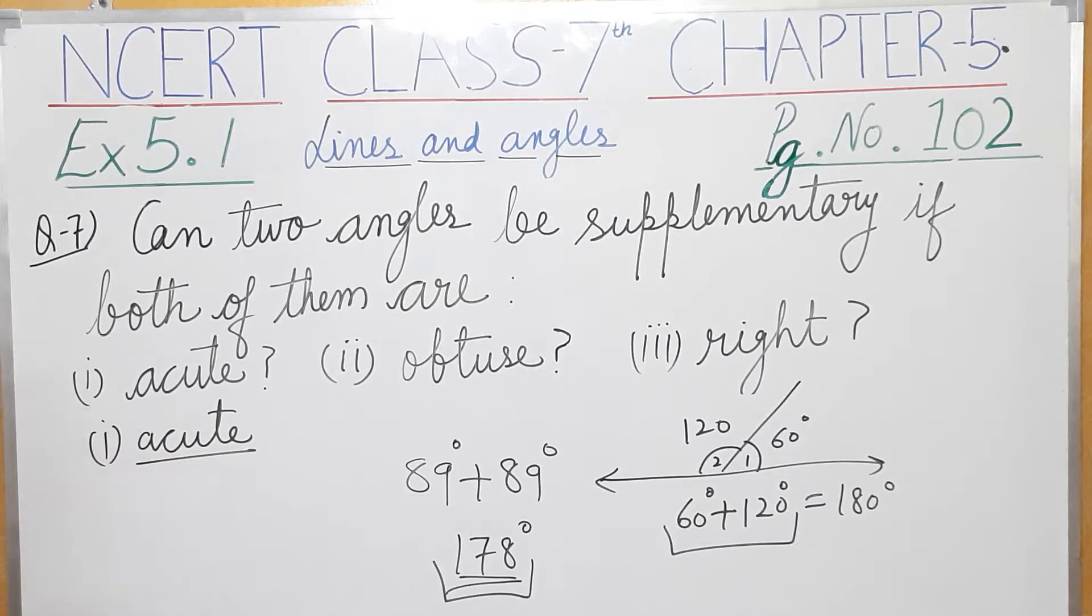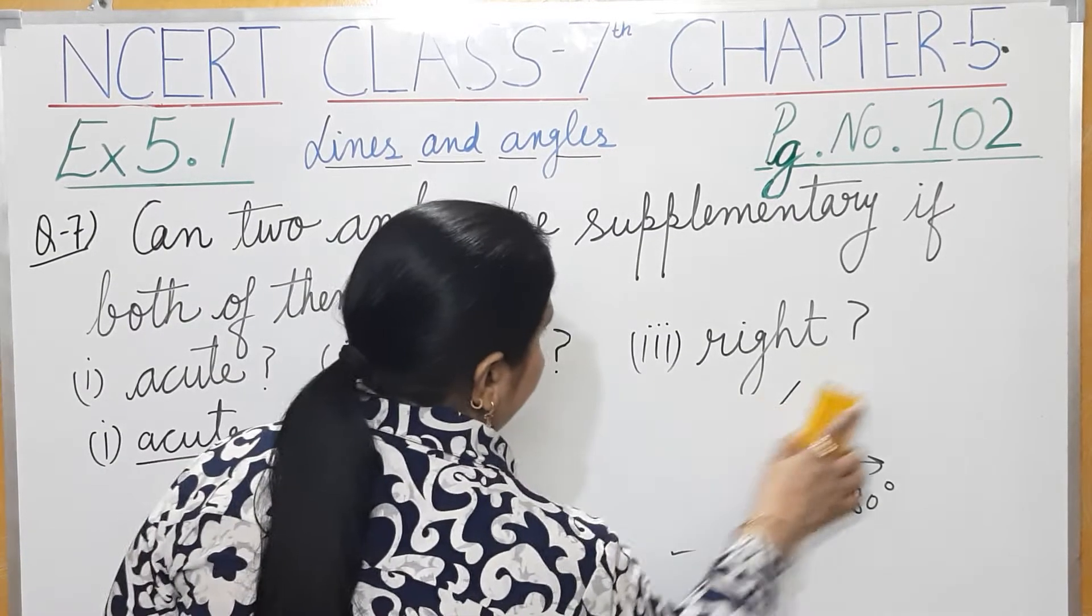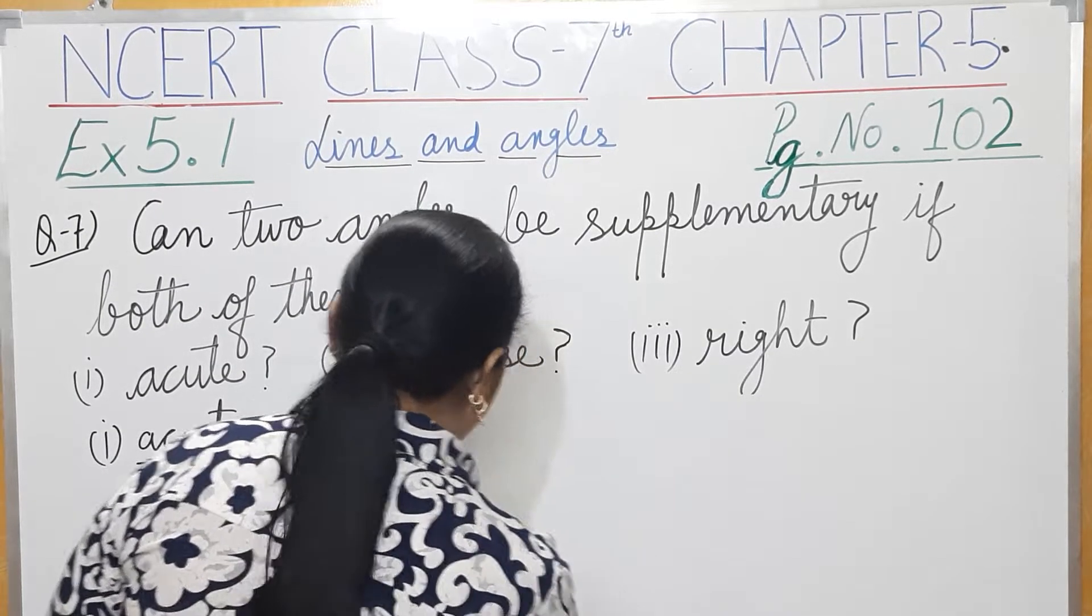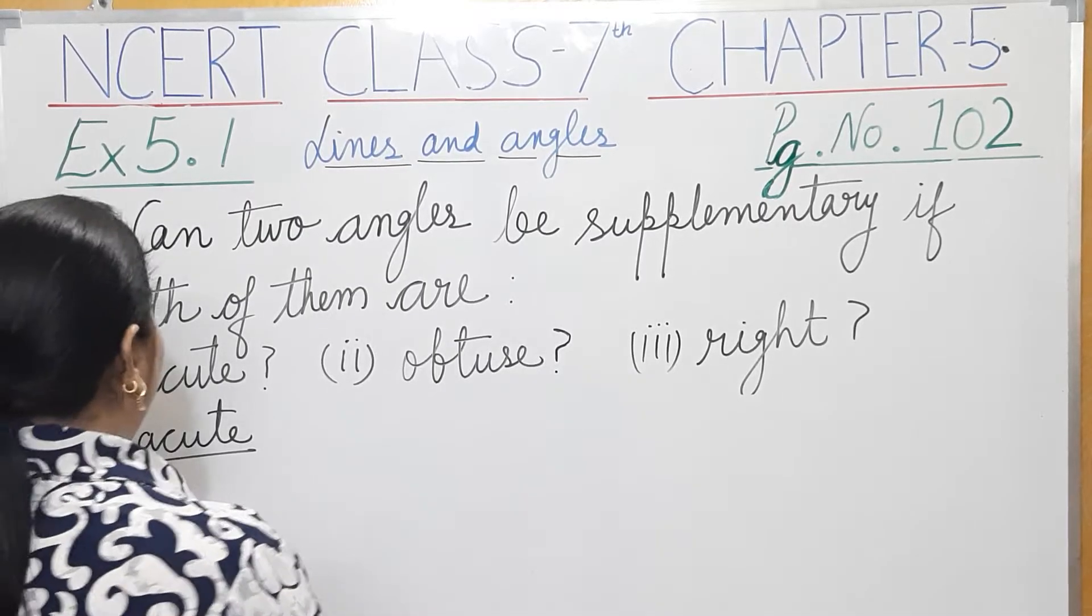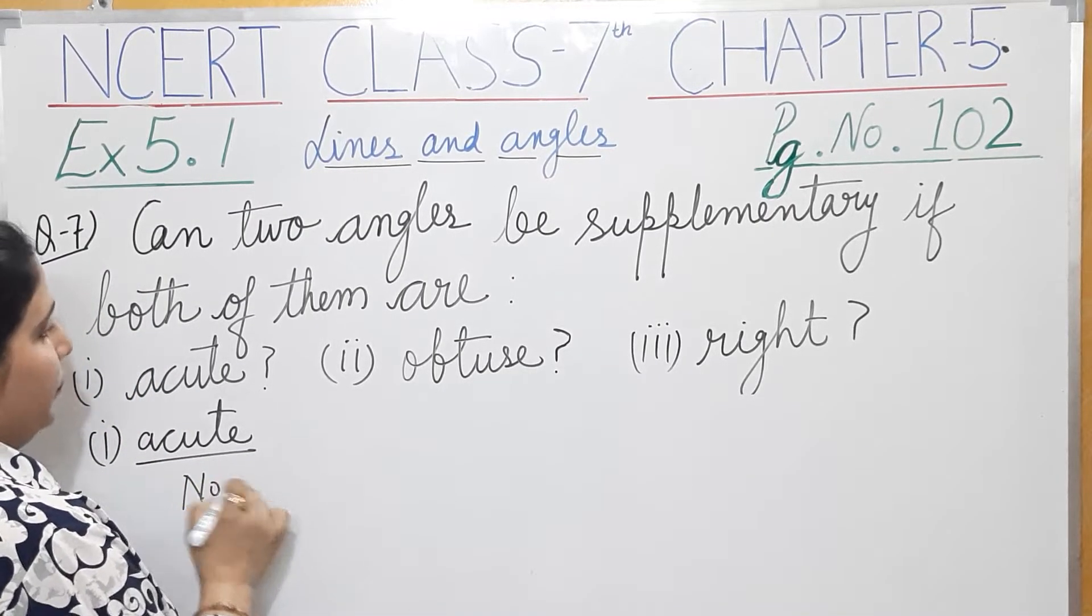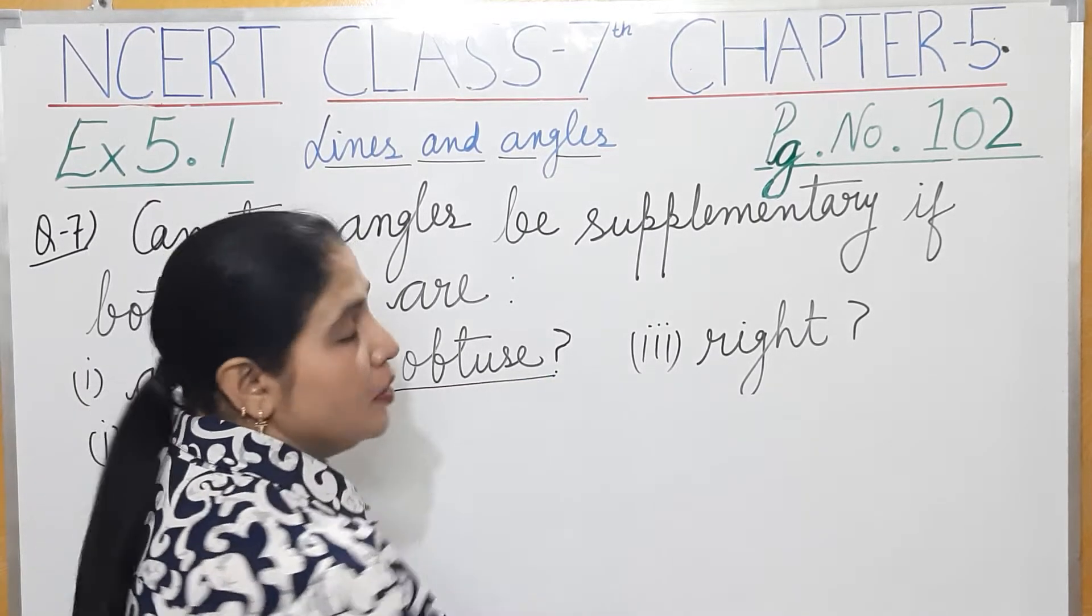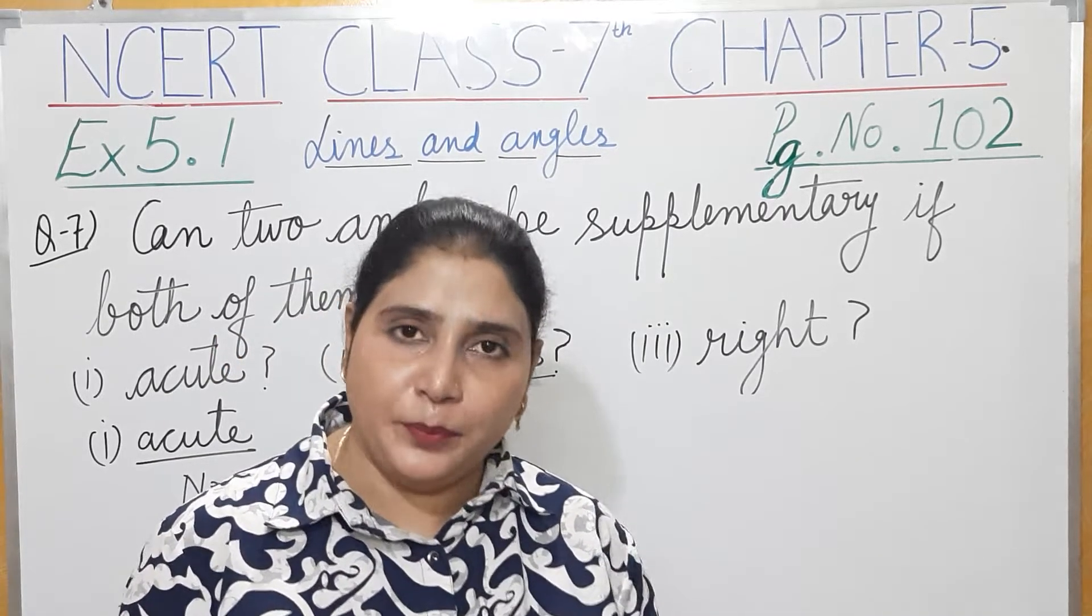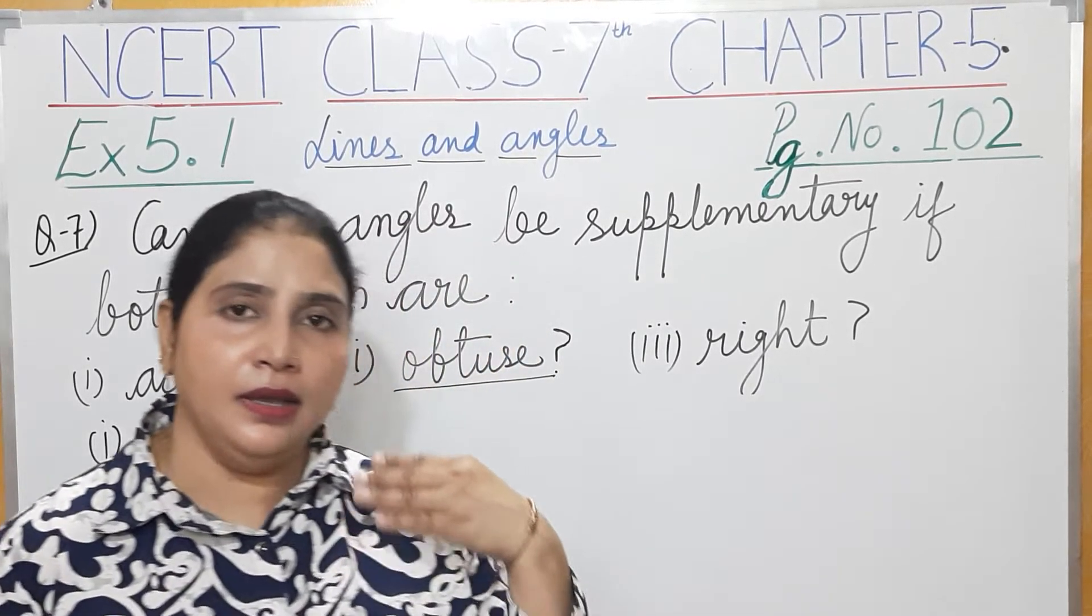Now the second is obtuse. Obtuse angles are those which are greater than 90 degrees and less than 180 degrees.